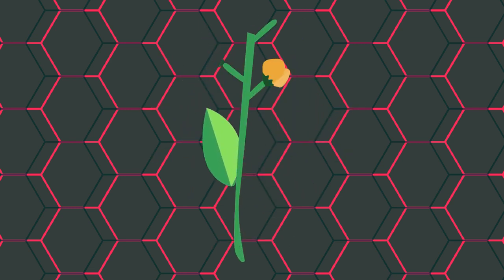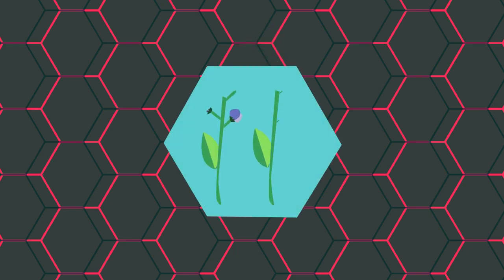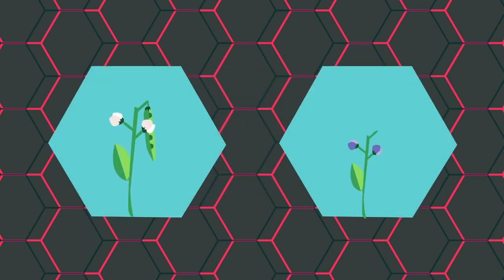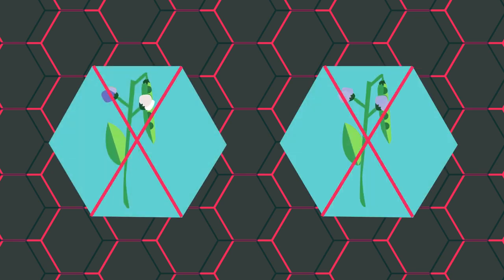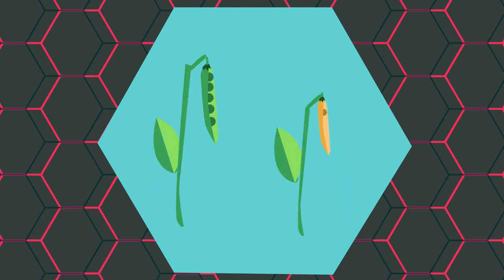Mendel studied the inheritance of different characteristics in pea plants. He found that when he bred purple-flowered plants with white-flowered plants, the offspring would either be white or purple, not a mixture of the two or a pale purple. He also noticed that this held true for other traits, like the seed and pod color either being yellow or green and not a mix, and the stems being long or short and not somewhere in the middle.